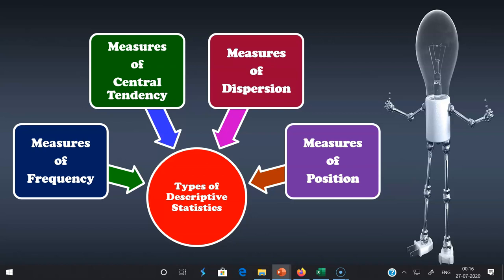The fourth type is measures of position. It consists of percentile rank and quartile ranks. It describes how scores fall in relation to one another, and relies on standard scores. It is used when we need to compare the scores to a normalized score — for example, a standard normal distribution.